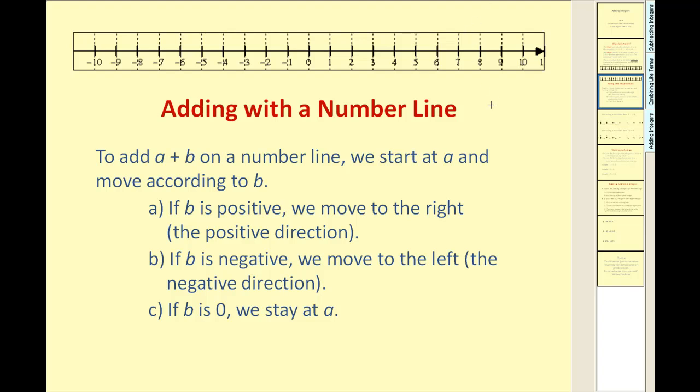There are several ways to illustrate the adding of signed integers. One way is algebra tiles, which I will show in the video entitled Subtracting Integers. But for this video, we'll take a look at adding with a number line. To add a plus b on a number line, we start with a and move according to b. If b is positive, we move to the right. If b is negative, we move to the left. And if b is zero, we stay at a.